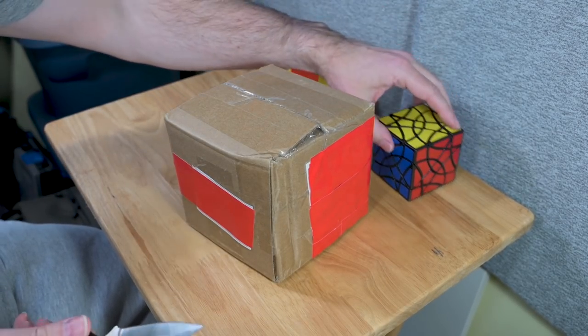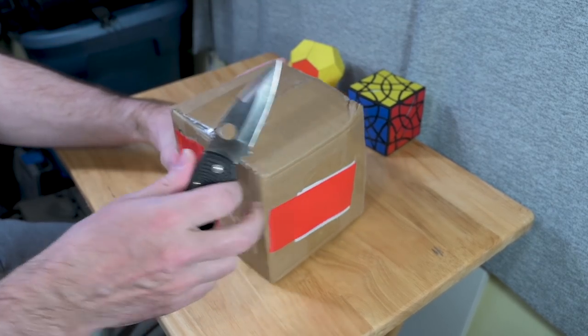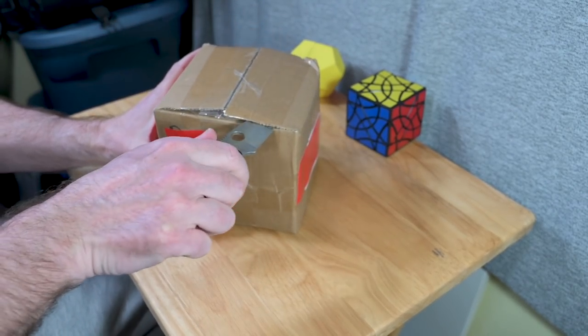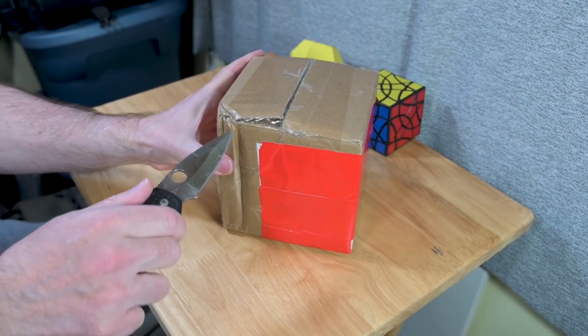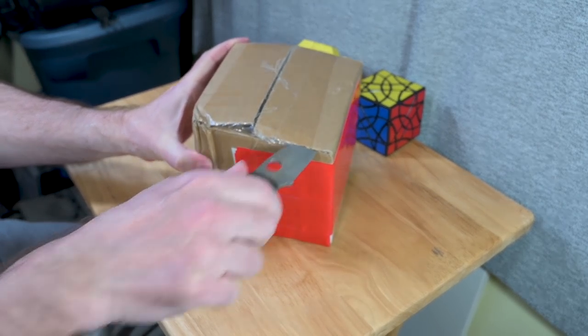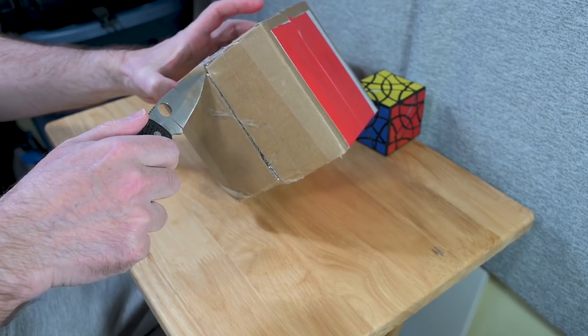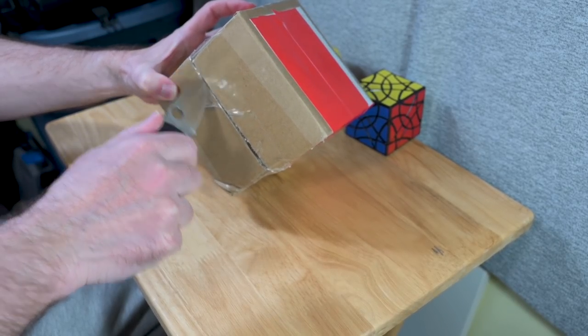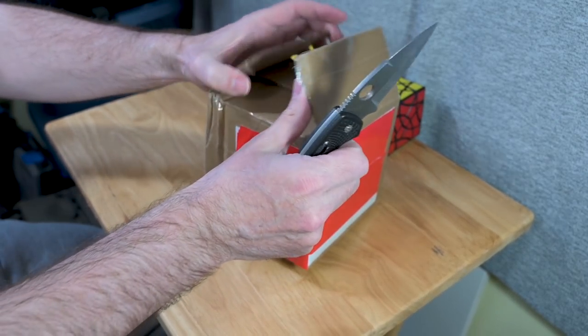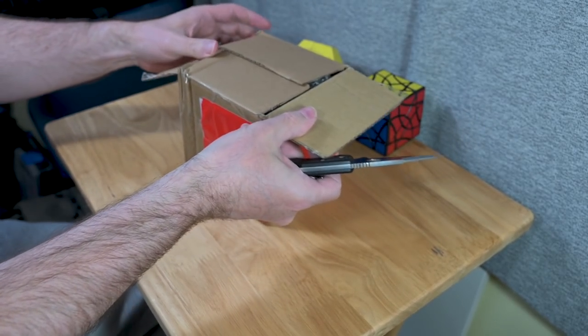Now the curious thing about this is that Diane did not call it the truncated triakis tetrahedron. They called it a hexadecagon. That's an interesting choice of name.